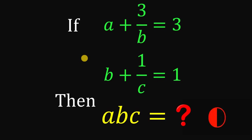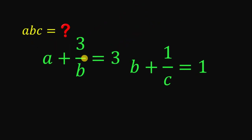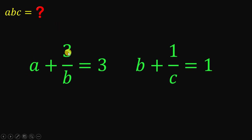And now, let's answer this question together. Our goal is to find the value of the product of a, b, and c, given these two equations: a plus 3 over b equals 3, and b plus 1 over c equals 1.